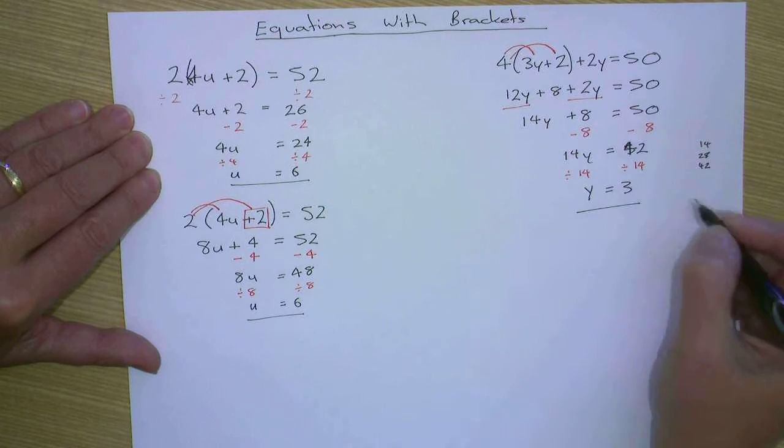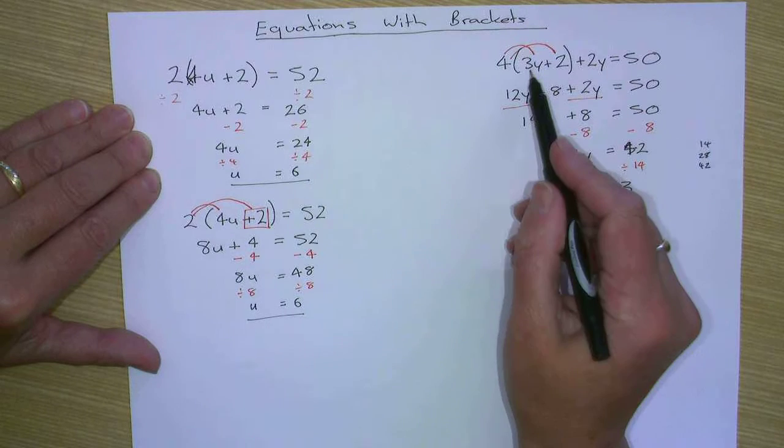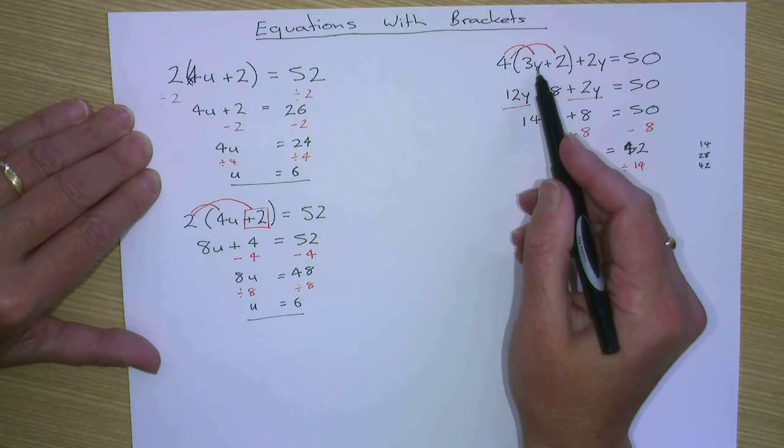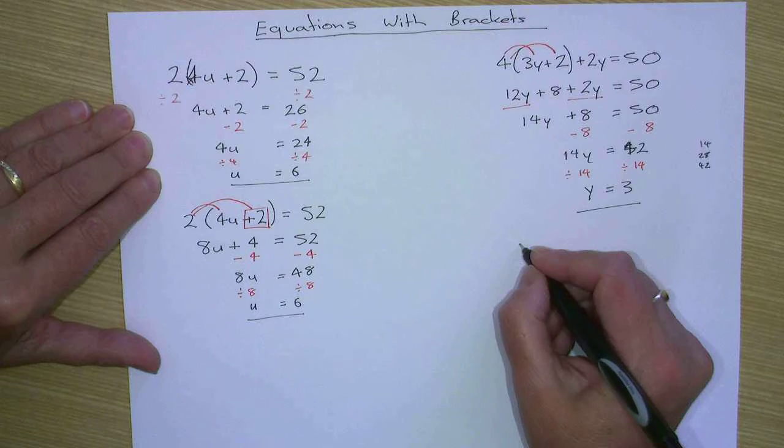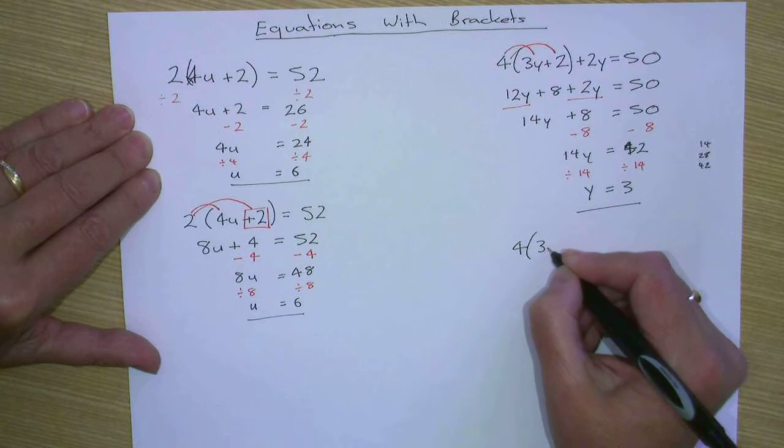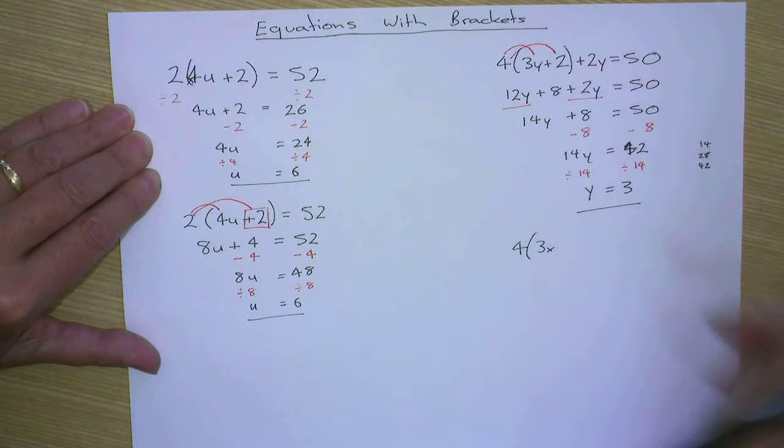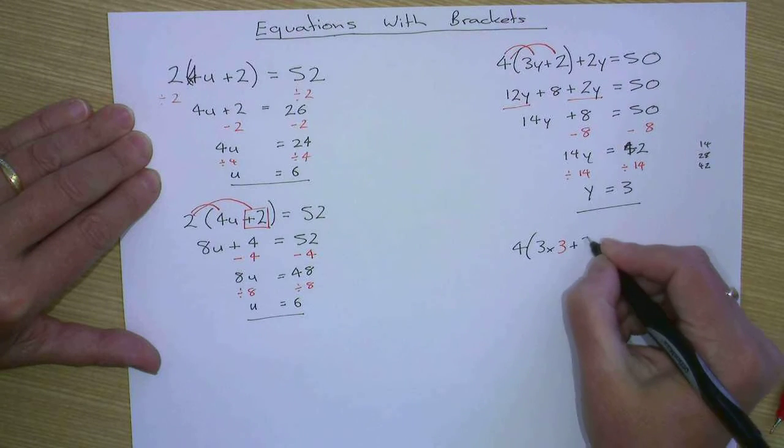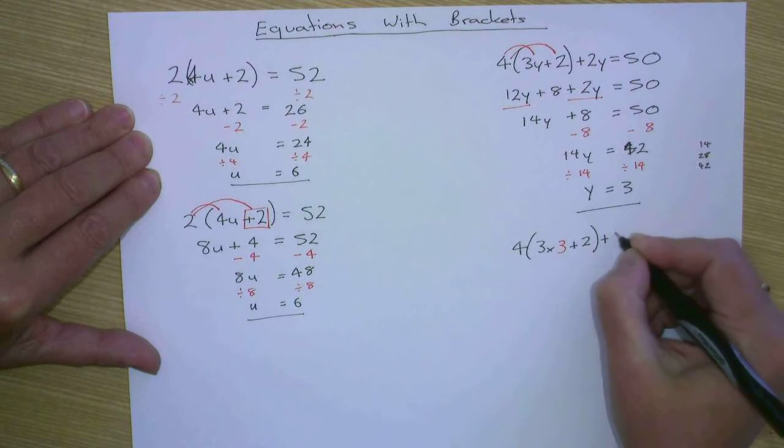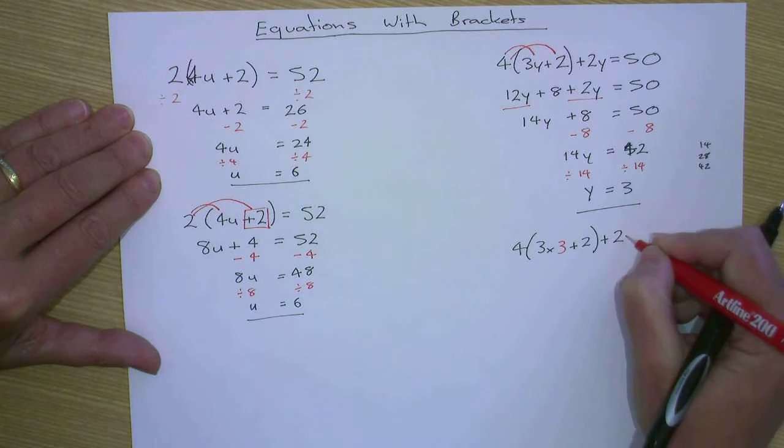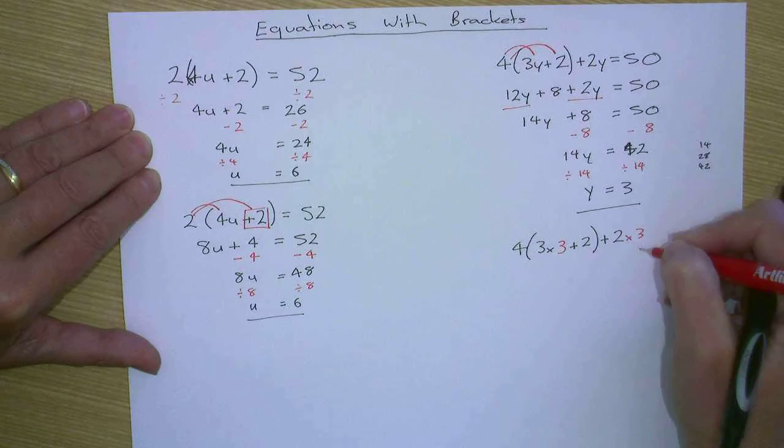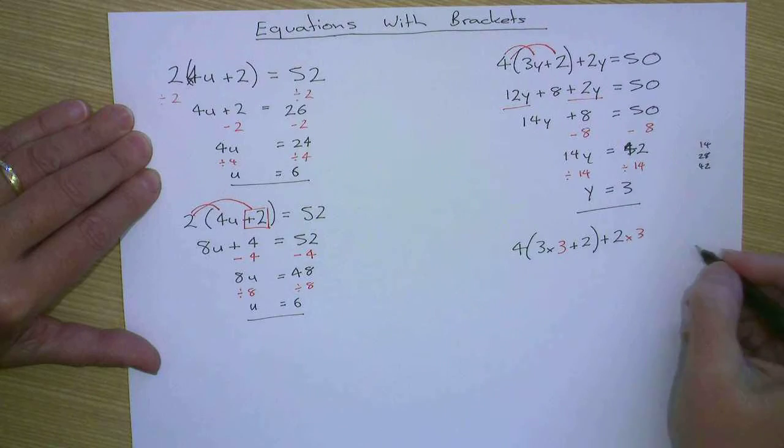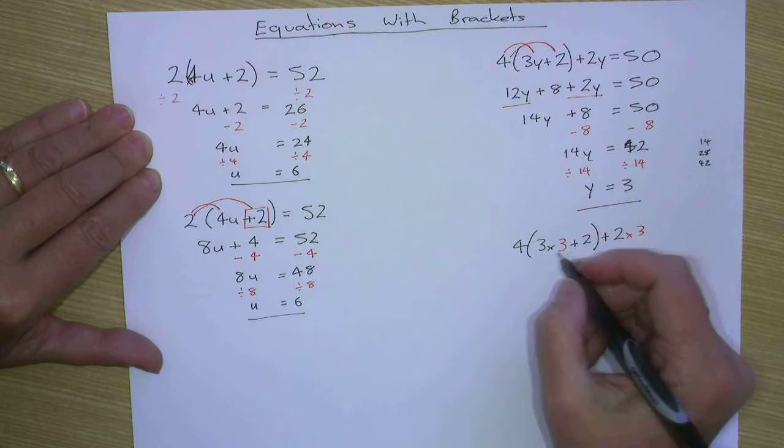So let's just substitute this here. Three times y. I'll write it out. Three times. Now instead of the y, I'm going to put the three. Plus two, plus two, plus two times three. There's our y there. And we'll calculate that. So, by the math, we do our brackets first.